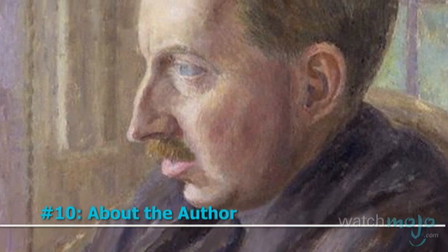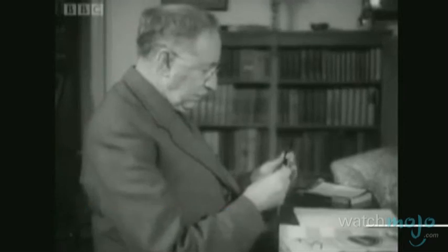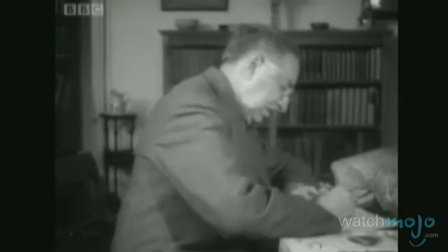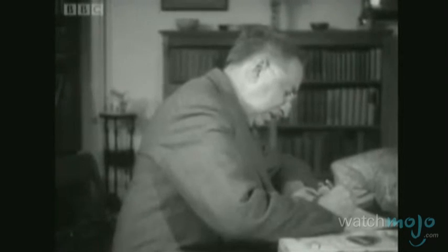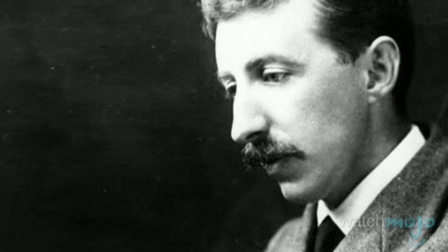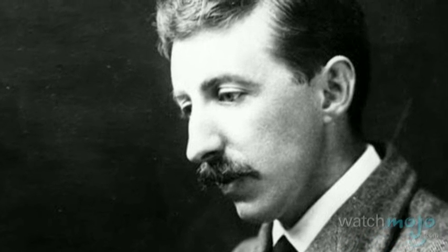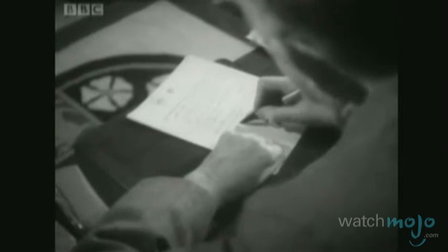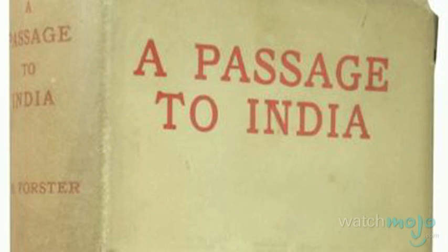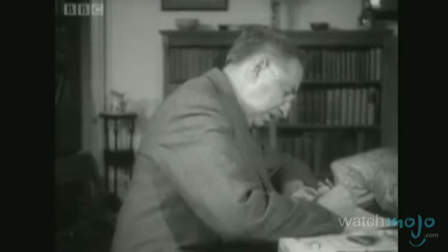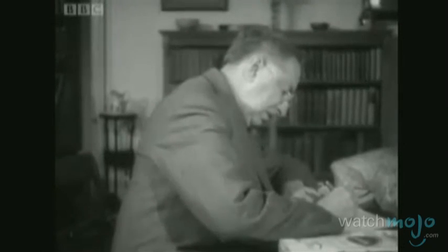Number 10: About the Author. Born in 1879 in London, England, E.M. Forster used the money he inherited from a relative to become a writer. After going to university, he spent his time writing, traveling, and working as a BBC radio broadcaster. While he was alive, he published five novels, including the successful A Passage to India. He also wrote short stories and essays. He died in 1970.